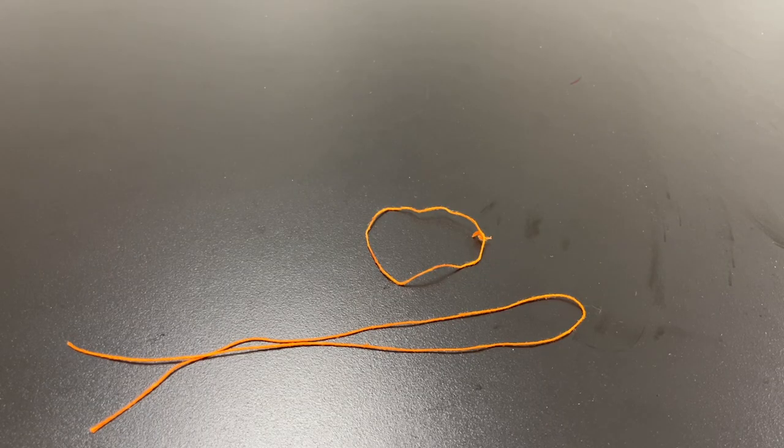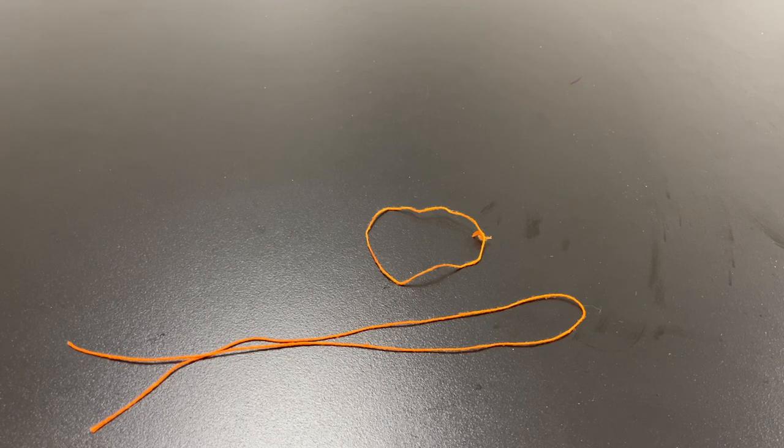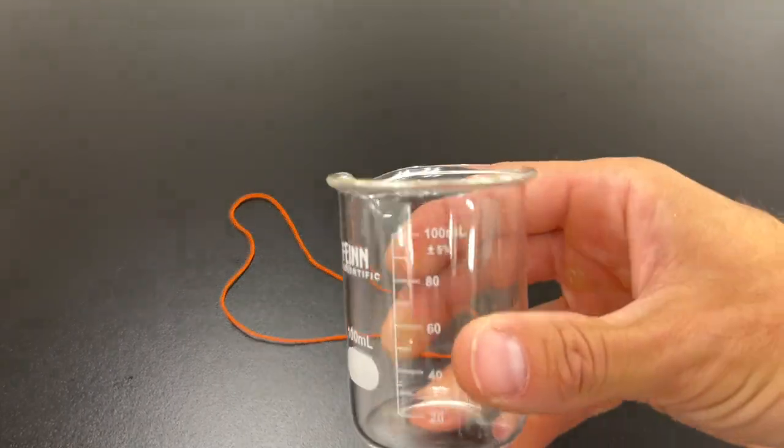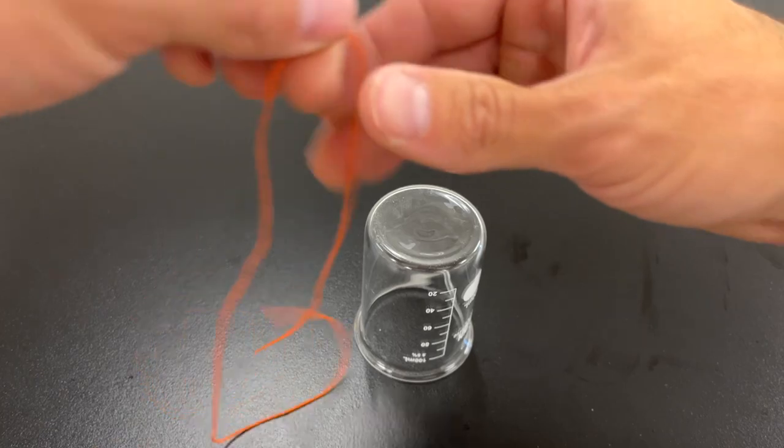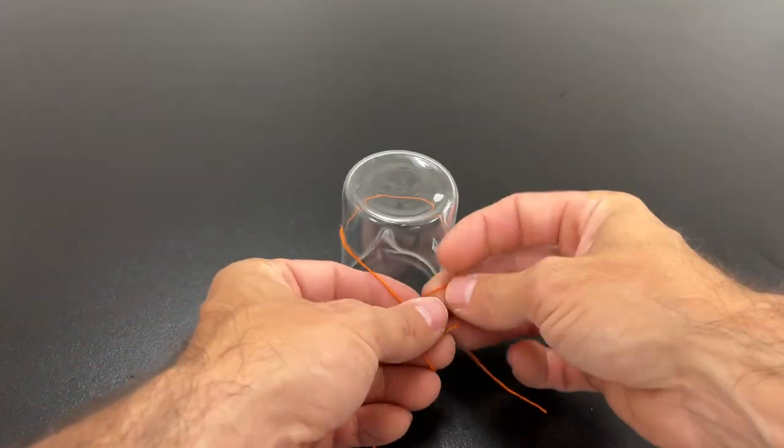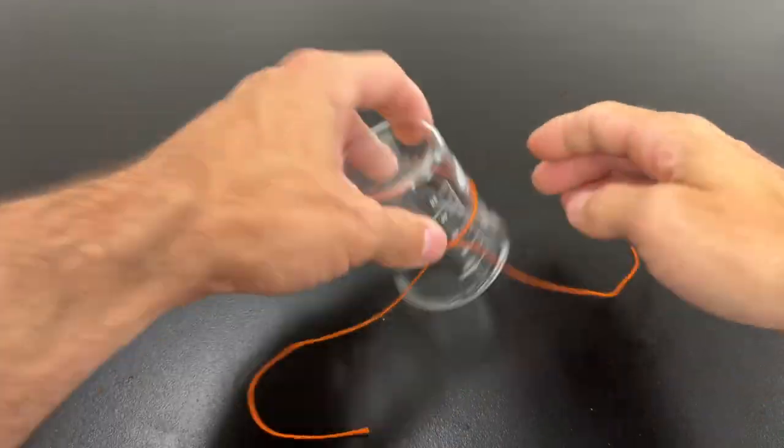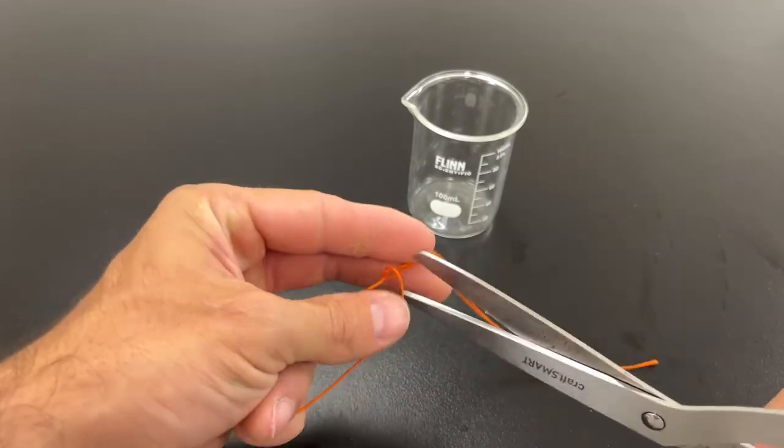Now it's time to make a circle out of a really light thread and it does work best if you have a thread that is pretty light. To do this, just find some sort of container and you're going to wrap it around and tie a knot. And then once you're done, just cut off the excess string.